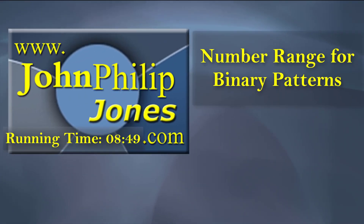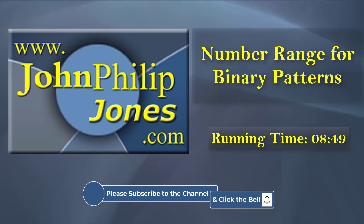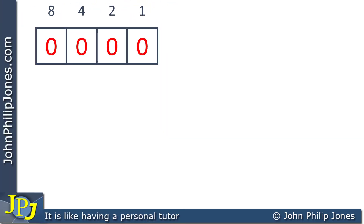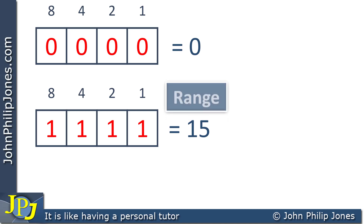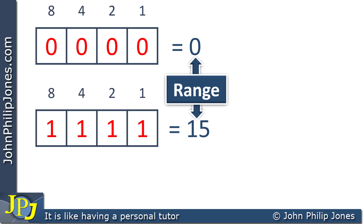In this video, I formalize how you can calculate the number range for binary patterns. In the previous video in the playlist, we looked at what value a nibble gives us where everything is a zero, and we worked out that it was indeed zero. We went on to show what a nibble's value was when every position was a one, and we worked out that to be 15. The range will go from zero all the way up to 15, where 15 is the biggest value you can expect to see in a nibble.